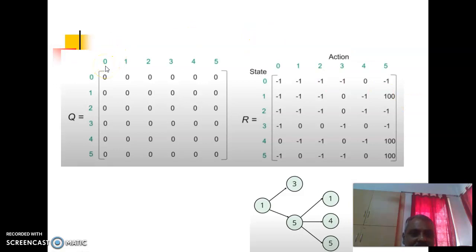We will initialize the Q matrix or Q table to be 0 matrix, all the elements to be 0s. These rows correspond to states and the columns correspond to actions. We will also write a reward table and we will give reward only when from some state to a goal state there is a path. 1 to 5 there is a path, a direct path is there, so we will give 100.